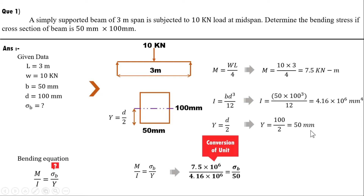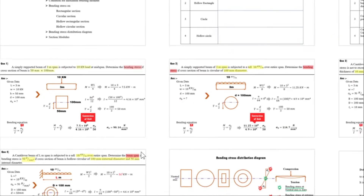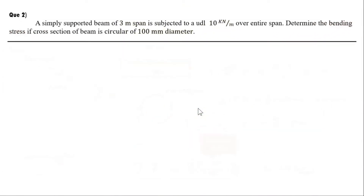An important point is unit balancing: convert 7.5 kN·m to 7.5 × 10⁶ N·mm. Substituting into the bending equation, we get σ_b = 90.14 N/mm².